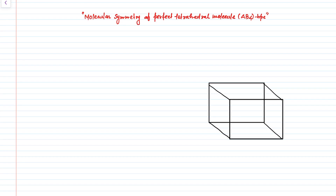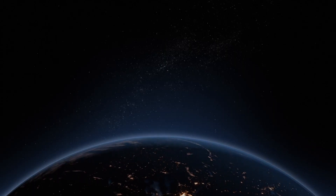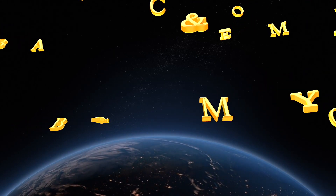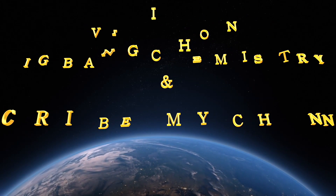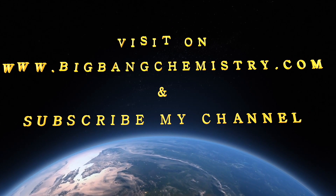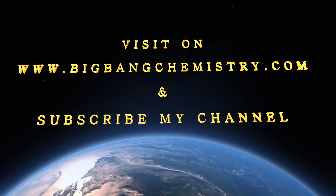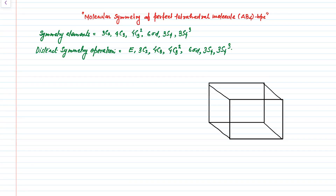For knowing these elements and operations, please stay tuned with me. The symmetry elements present in this molecule are: 3C2, 4C3, 4C3 squared, 6 sigma D — which is your dihedral plane — 3S4 and 3S4 cubed.